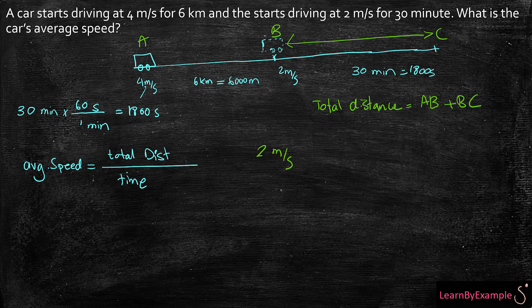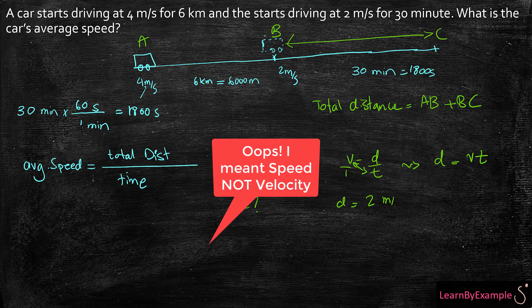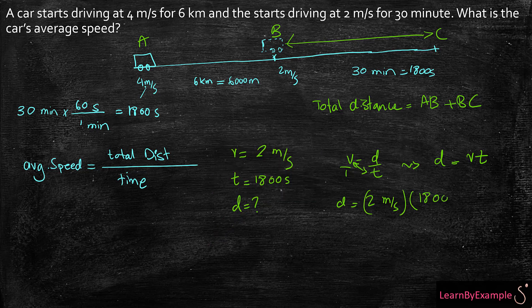I'm going to use simple physics to find the B to C distance. My speed is 2 meters per second and I'm going at 2 meters per second for 1,800 seconds. I'm trying to find how far I've traveled. The most simple equation in kinematics says speed equals distance over time, so rearranging: D equals V times T. My distance is 2 meters per second times 1,800 seconds, which gives me 3,600 meters.